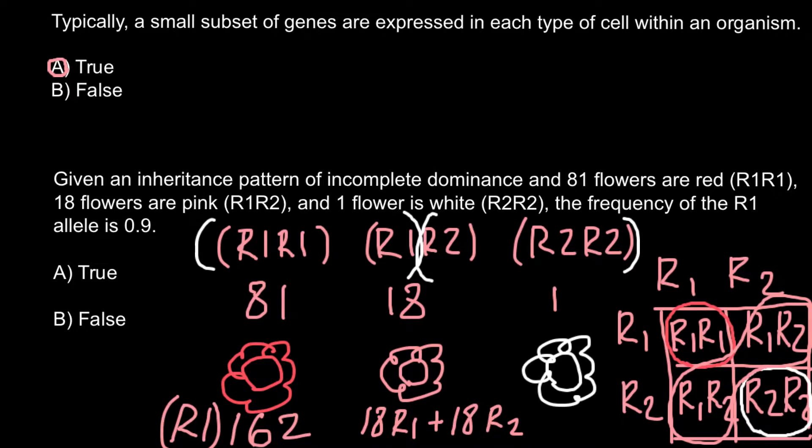In our last example, we have one plant with genotype R2R2, which means two R2 alleles. Now it's easy to calculate the total number of alleles.